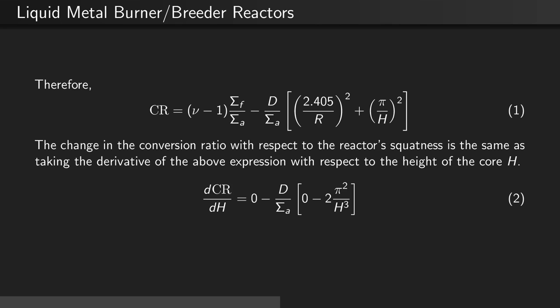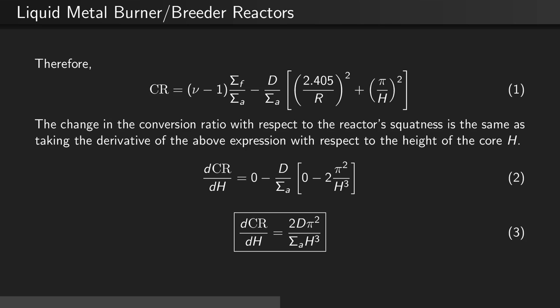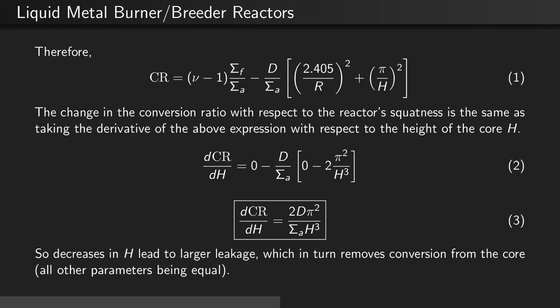The change in the conversion ratio with respect to the reactor's squatness is the same as taking the derivative of the above expression with respect to the height of the core H. dCR/dH equals 0 for the first term since it does not depend on the height, minus the diffusion coefficient divided by the absorption cross-section times 0 minus 2 times π squared H divided by H cubed. So dCR/dH equals 2D π squared divided by Σa H cubed. Decreases in H lead to larger leakage which in turn removes conversion from the core, all other parameters being equal.